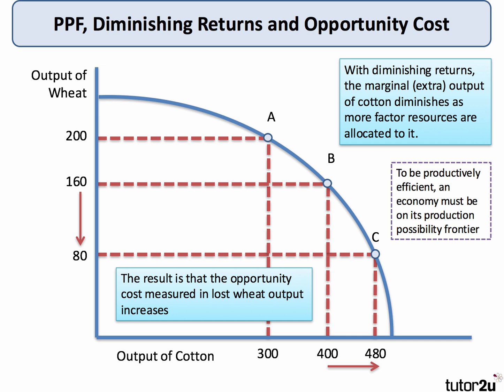So let's say we move from output B on the PPF to output C. We're increasing our output of cotton by 80 units, but having to sacrifice 80 units of wheat. The opportunity cost has increased, because for each extra tonne of cotton we're having to sacrifice one tonne of wheat. Therefore, as we move down the PPF, if there are diminishing returns, the marginal opportunity cost — measured in terms of lost wheat — goes up.